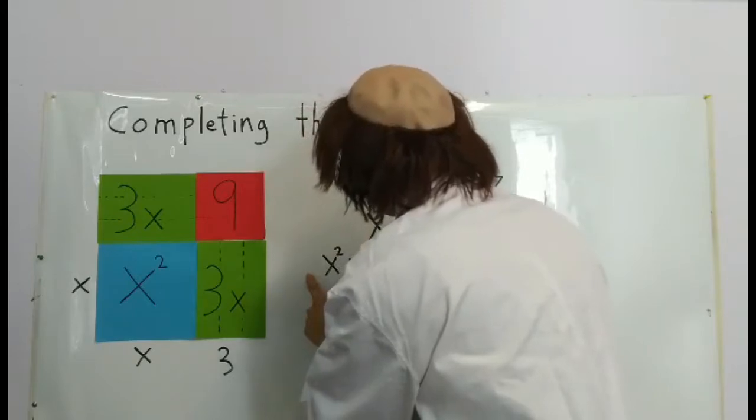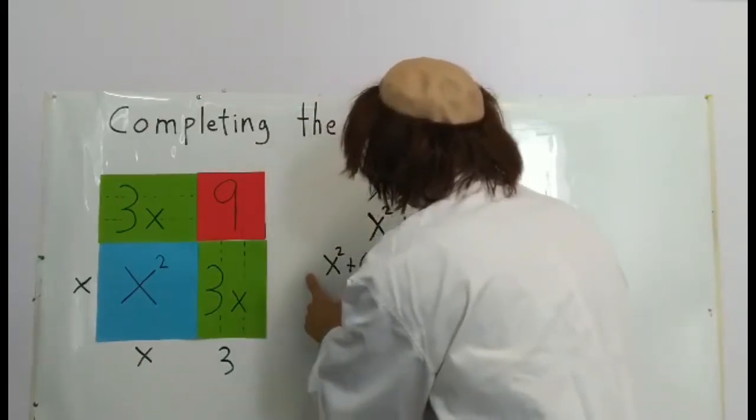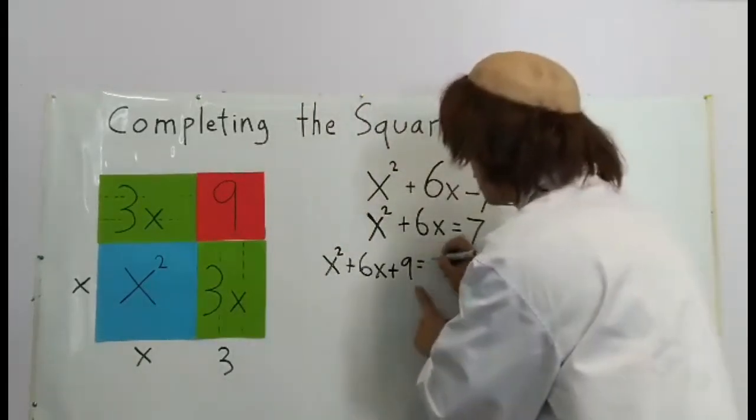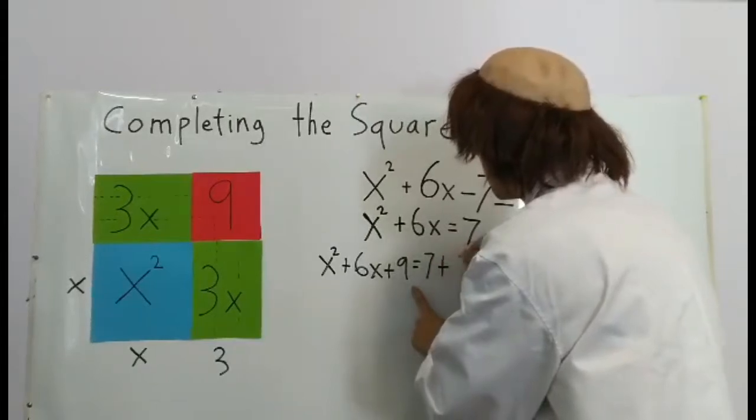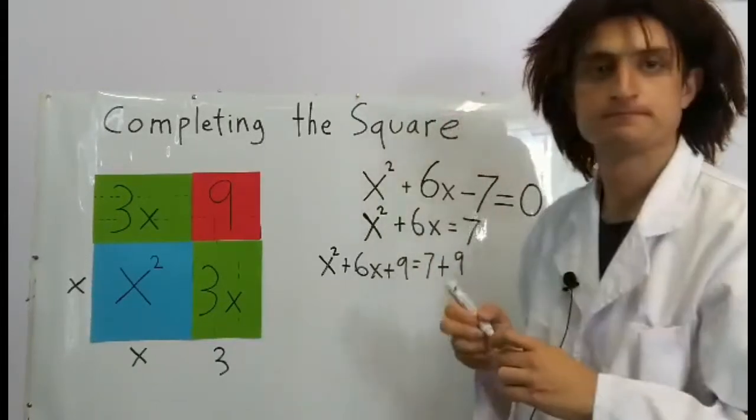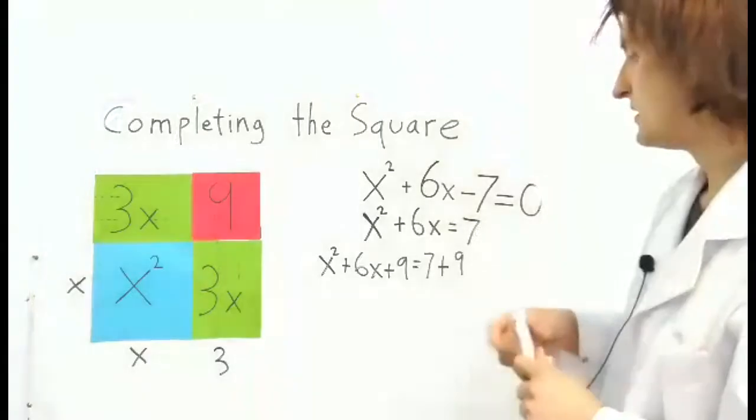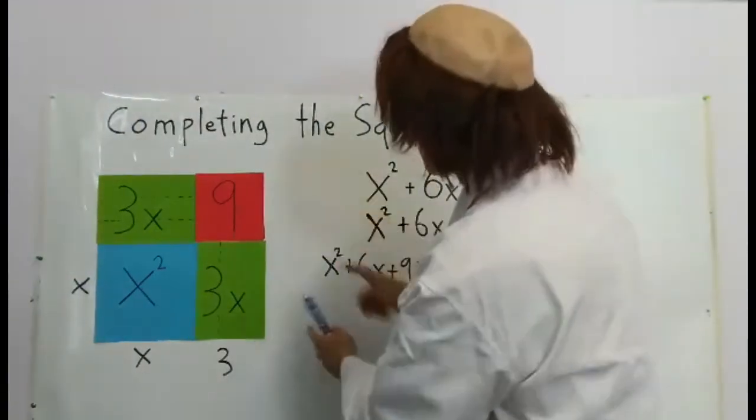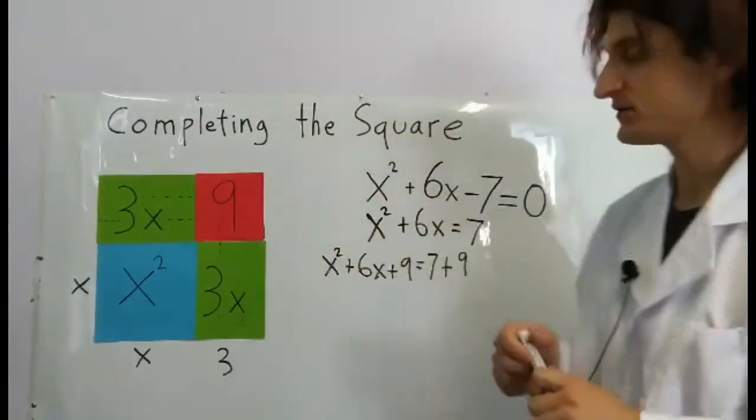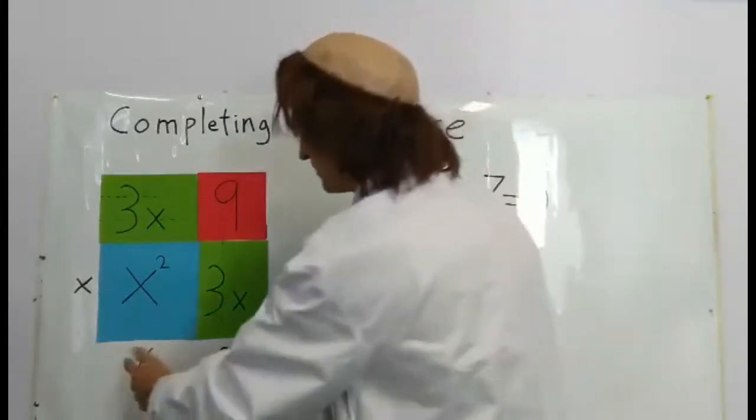Since this is a square, we can factor it. What's the height? x + 3. And the width? x + 3. And on the right we have 16.